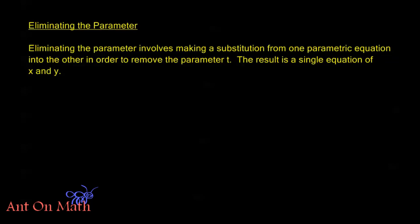In this video we're going to talk about the process of eliminating the parameter. Now eliminating the parameter involves making a substitution from one parametric equation into the other parametric equation in order to remove the parameter t completely. The end result is always going to be a single equation of x and y. So we're taking our parametric equations and we're trying to get back to what we're used to using, what we're used to seeing, just these equations for curves that only involve x and y.